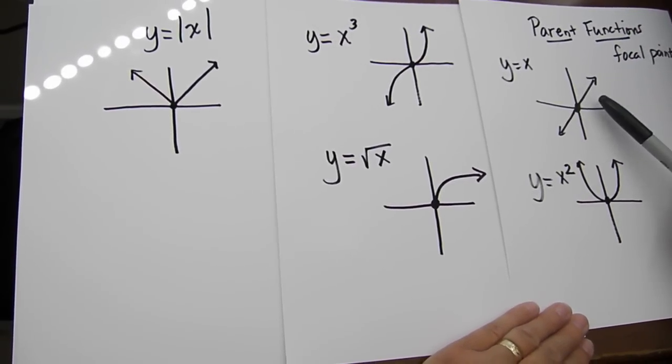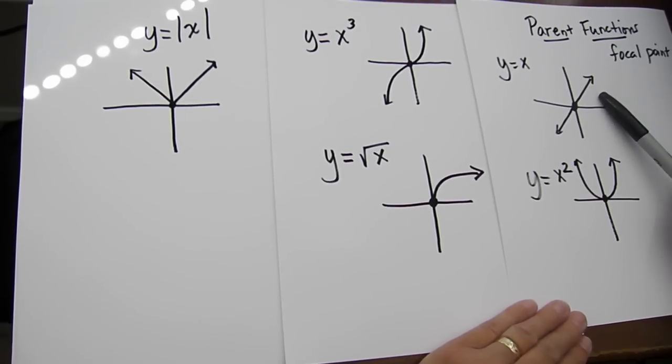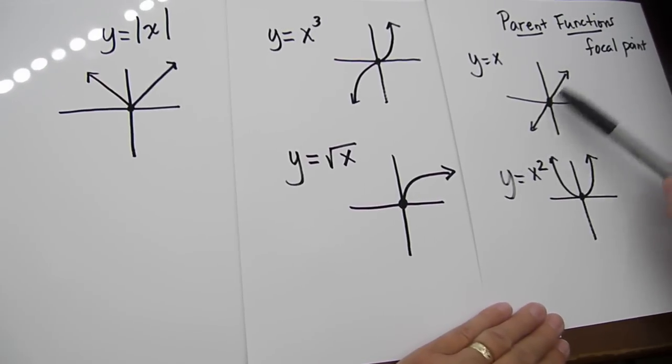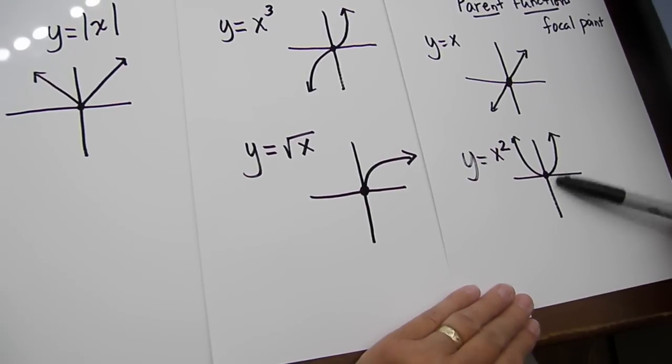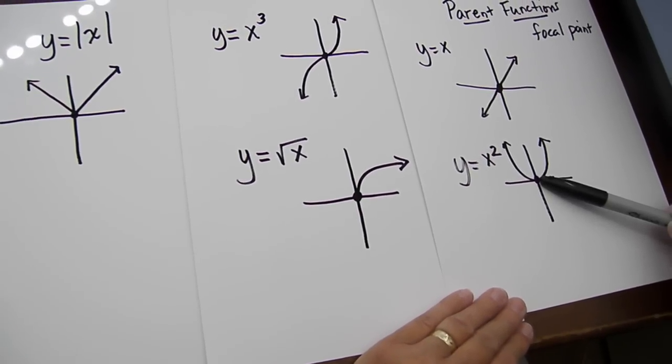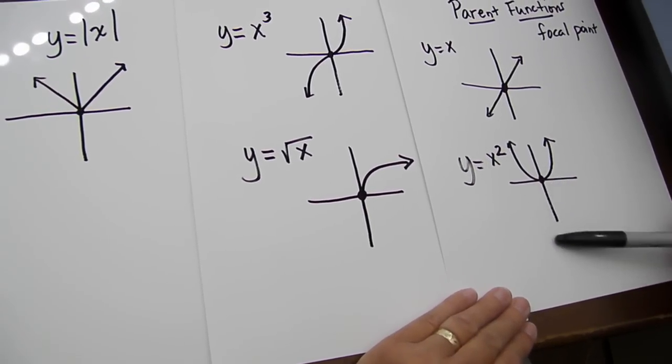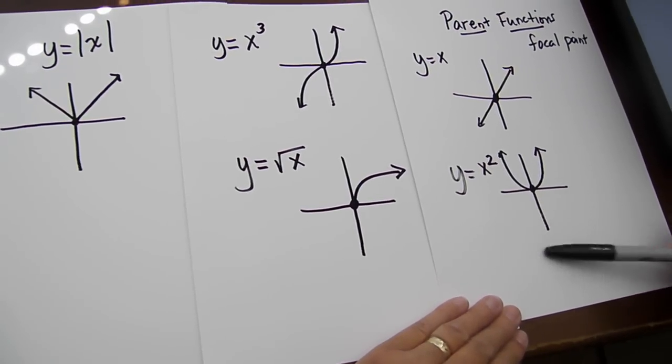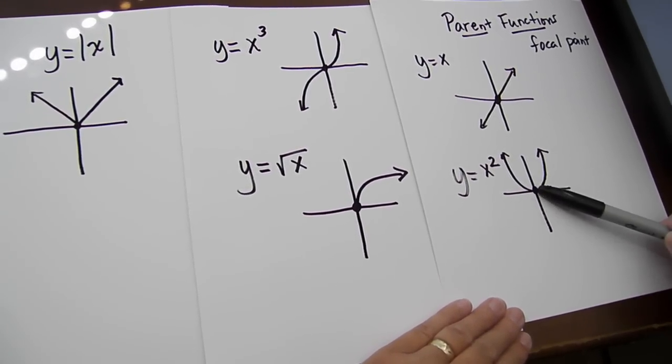The range on our linear function, Y equal to X, the range is negative infinity to positive infinity or all real numbers. Here, the range is values that are greater than or equal to 0. We do not have any Y values that are negative, so therefore, its range is restricted to greater than or equal to 0.